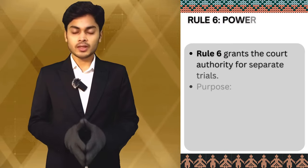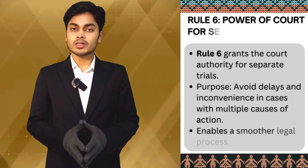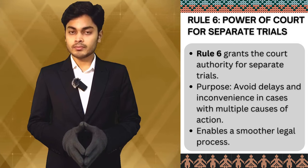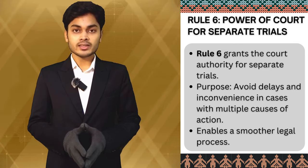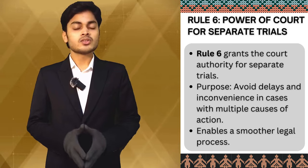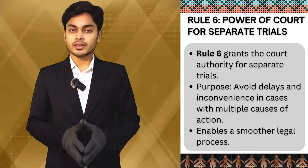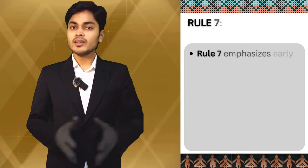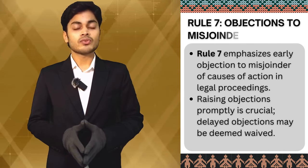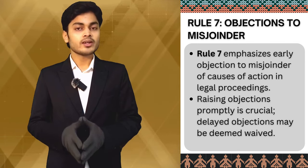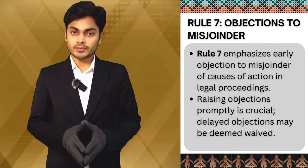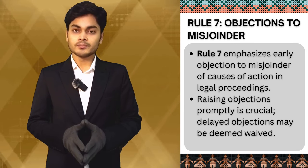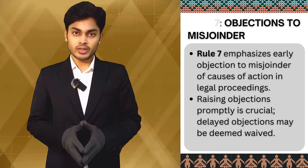Rule 6 gives the court the authority to order separate trials if it believes that joining multiple causes of action might lead to delays or prove inconvenient. This is to ensure a smoother legal process. Rule 7 highlights the importance of raising objections related to the misjoinder of causes of action early in the legal process. If not raised promptly, such objections may be considered waived.